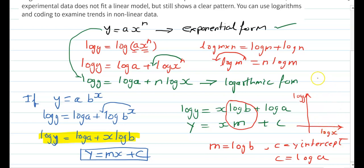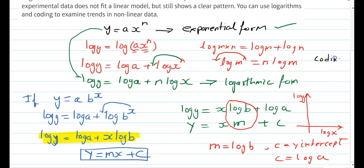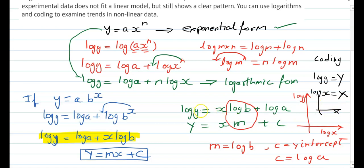When we are using coding, we are replacing log y as Y and x as X. So the graph will be between log y and x. Let's see a couple of questions to apply this theory — then the picture will be more clear.